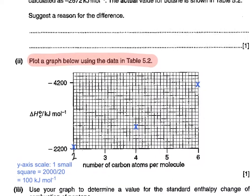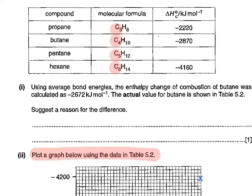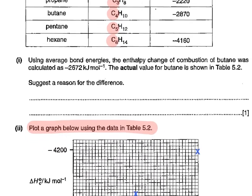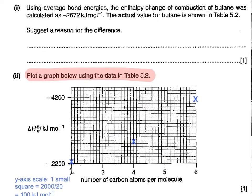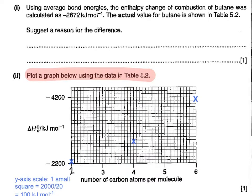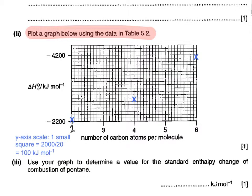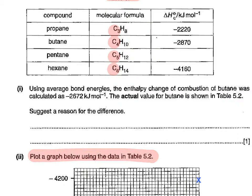Looking at my other values, you can see that for six carbons, it's minus 4160. And we've got to estimate the value for the number of carbon atoms being five, because it says use your graph to determine a value for the standard enthalpy change of combustion of pentane. And as you can see, pentane is five carbons.